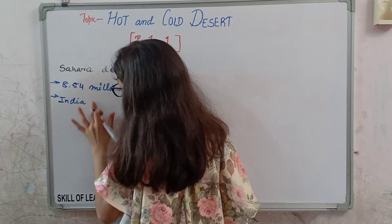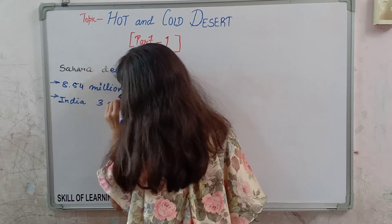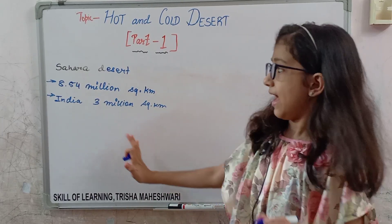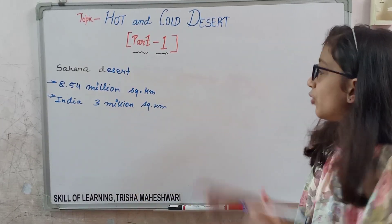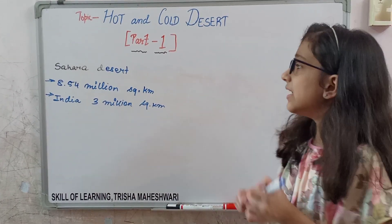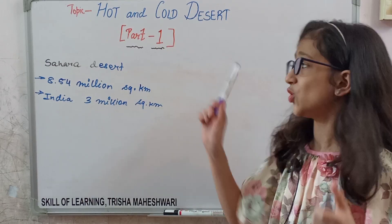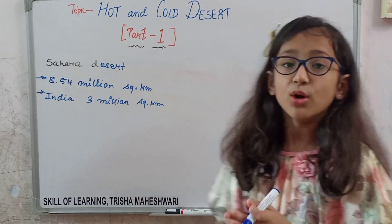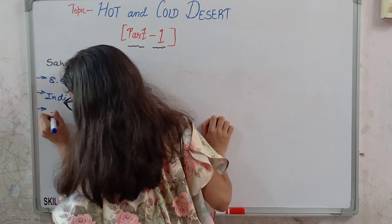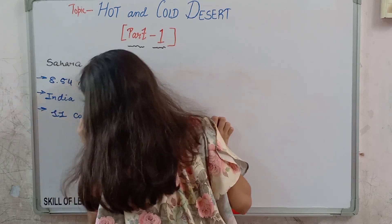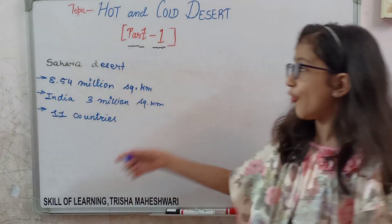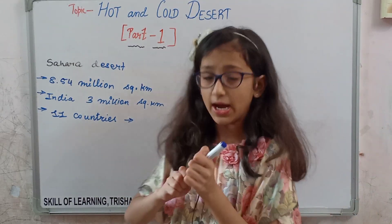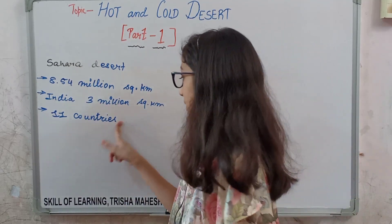The Sahara Desert is about 9 million square kilometers. If you put India two and a half times together, you get one Sahara Desert — can you imagine how big it is? It consists of 11 countries. Some examples are Egypt, Algeria, Niger, Mali, and Morocco.